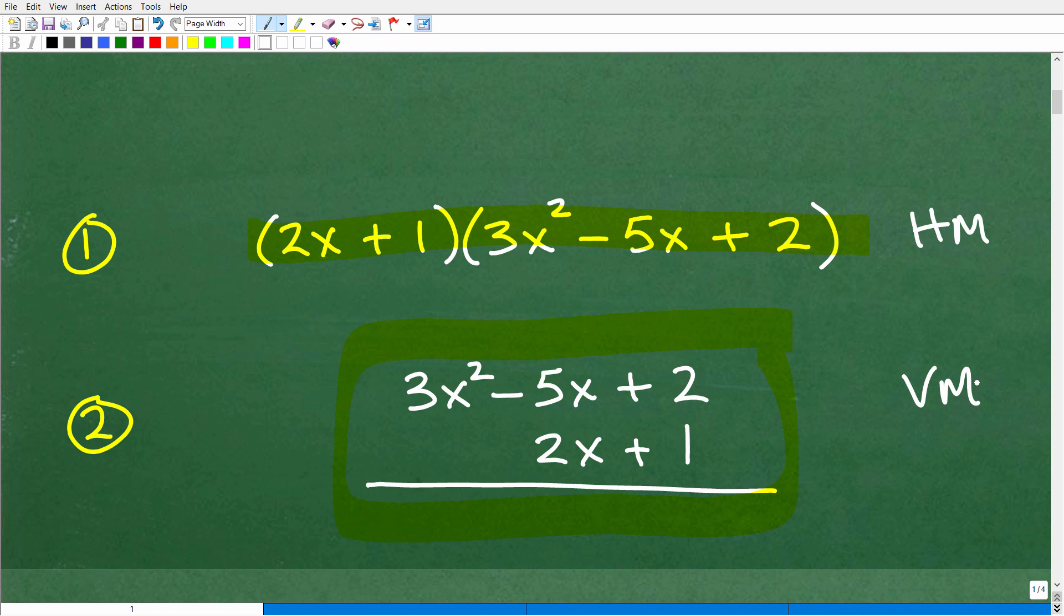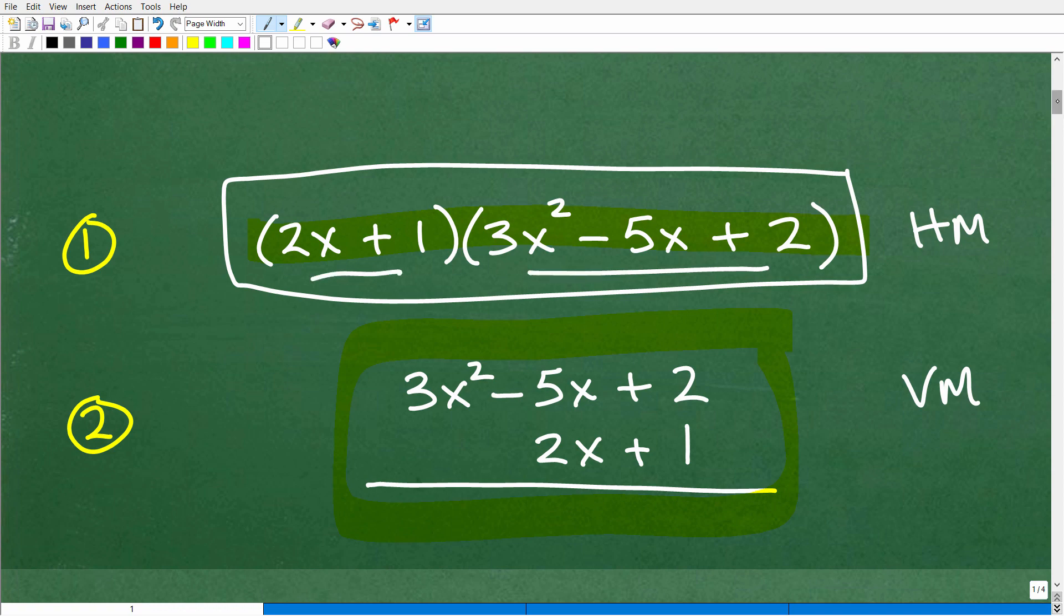So either one will work. And by the way, when you're taking any kind of algebra course, when I talk about algebra, you could be in Algebra 2, Precalculus, Intermediate Algebra, College Algebra, Math 101 at your college. It doesn't make a difference. If you're studying algebra within that course, you're going to need to know this stuff. And you should know both of these methods. But I'm going to go ahead and use this horizontal method here to actually find the product of this binomial times this trinomial. So let's go ahead and get to it.